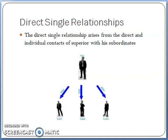The first type is the direct-single relationship. If you are working as a supervisor, you will be having direct contact with your subordinates. The subordinates will be having various roles and responsibilities. After they complete their roles and responsibilities, they have to directly report to the superior. This is called the direct-single relationship.